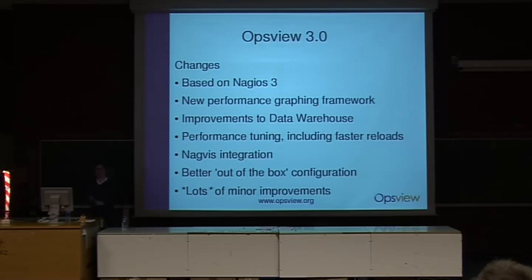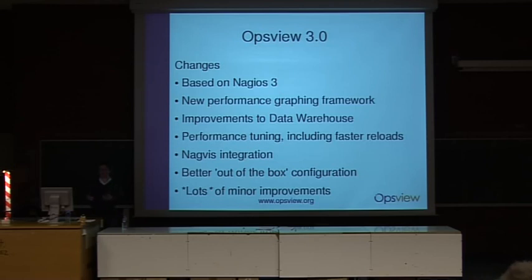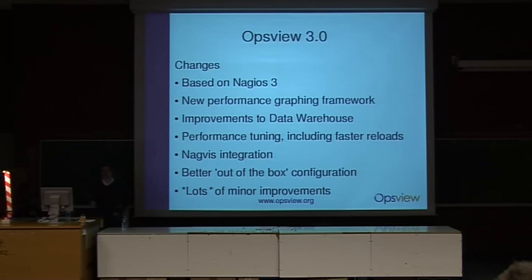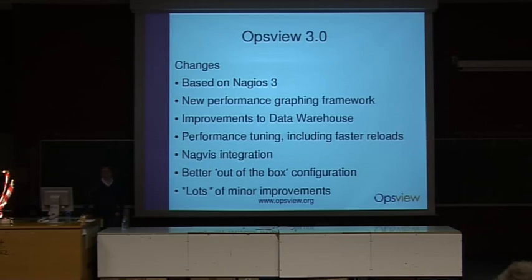So what's in OpsView version 3? The main change is it's based on Nagios 3. We've got a new performance graphing framework, which makes it easier to get performance graphing information out using RRDs and stores it in a better format. We've improved the data warehouse, made improvements to performance including faster reloads especially on very large systems — the reload cycle is 10% quicker and we expect further improvements. We've integrated NagVis, a popular part of the Nagios ecosystem and a nice tool for visualizing status information. And we've included a better out-of-the-box configuration with lots of minor improvements.